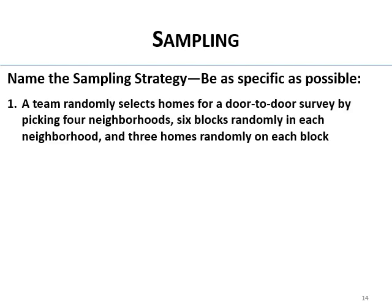Practice question: A team randomly selects homes for a door-to-door survey by picking four neighborhoods, six blocks randomly in each neighborhood, and three homes randomly on each block. There are multiple stages and each is done randomly — that's multi-stage random sampling.